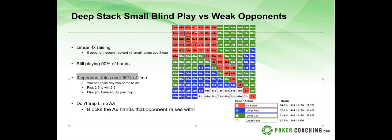An important exploit: if your opponent is folding over 50 percent of the time when you raise from the small blind, you can raise with any two cards to three times the big blind. You're putting in two and a half big blinds to win two and a half big blinds in the pot, so it only needs to work 50 percent of the time. If they don't defend the top 50 percent of their hands, you instantly make money.